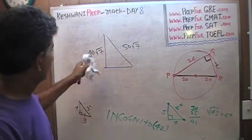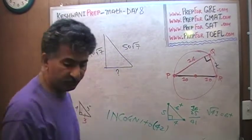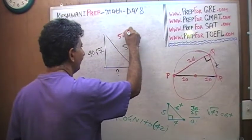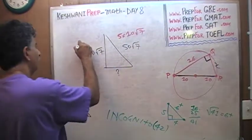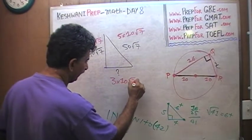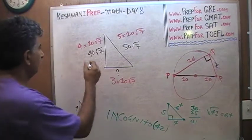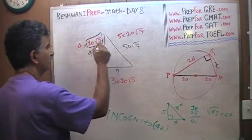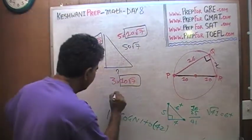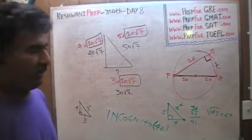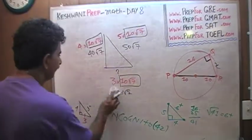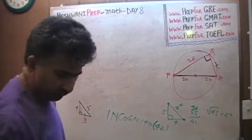One more: a right triangle with legs 50√7 and 40√7. That's simply 5×10√7 and 4×10√7. The common factor is 10√7, so the missing side is 3×10√7 = 30√7. Imagine trying to compute this by hand or calculator — it would take forever. This is much faster.